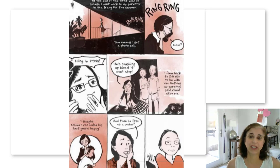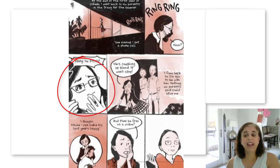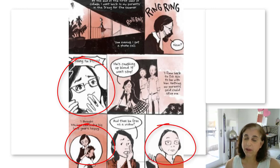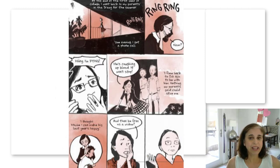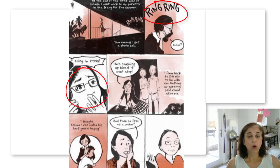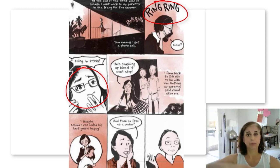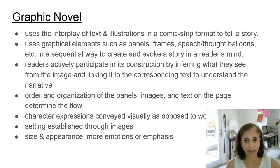Pay close attention to the characters' expressions because they're conveyed visually, as opposed to word descriptions which many of you are used to from traditional novels. Another key difference is the size and appearance of words and images. When a concept is being emphasized or the emotion is being focused upon, the image or the words might be in bold or they might be larger. So those are key elements to look at when reading a graphic novel.